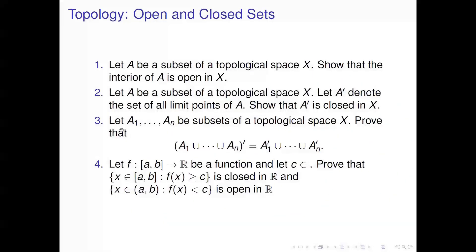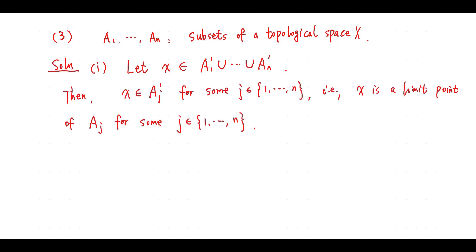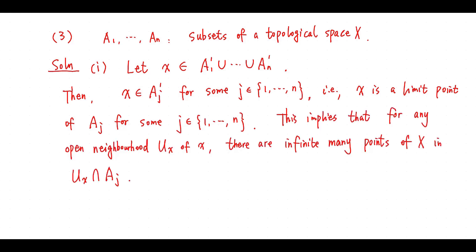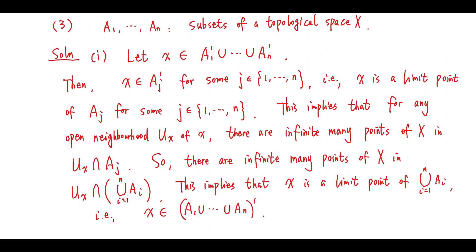Question 3: Let A_i be subsets of a topological space X. There are infinitely many points in the intersection of Ux and the union of A_i. This says X is a limit point of A_i. This shows this inclusion.